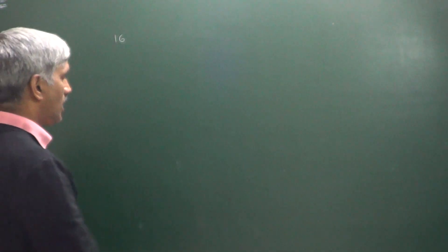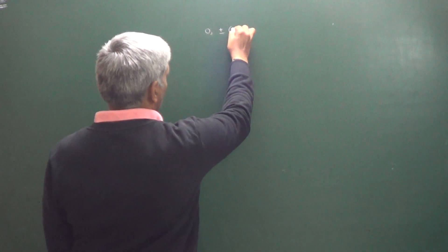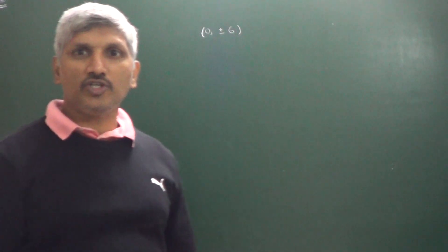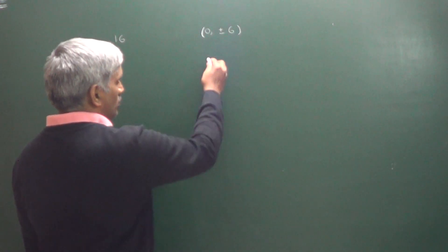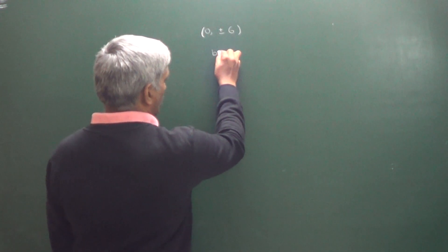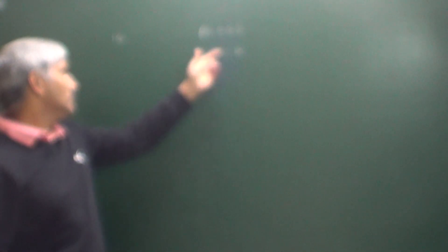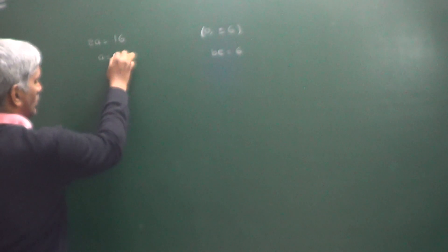The first question states the length of the minor axis is equal to 16 and the coordinates of the foci are (0, ±6). Focus coordinates (0, ±6) means it is the second form of an ellipse, so BE is equal to 6. In the second form of an ellipse, the length of the minor axis equals 2A, so 2A = 16, giving A = 8.